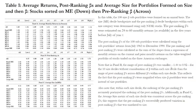Table 1 shows average returns, post-ranking beta, and average size of the size-beta portfolios. In Panel B, the range of post-ranking betas across size deciles — 1.44 to 0.92 — was smaller than the range across beta deciles within each size decile. The pre-ranking betas accurately portrayed the ordering of post-ranking betas within each size decile, and the average size metric was consistent across pre-ranking betas, suggesting that pre-ranking betas successfully produced variation in post-ranking betas unrelated to size.